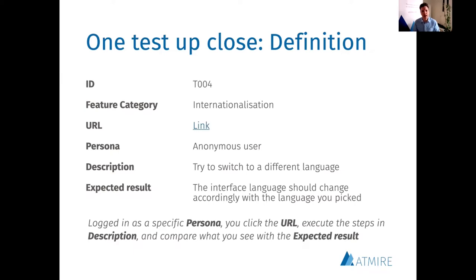The execution of each test implicitly starts with the imperative: as a specific persona — could be an anonymous user, an administrator, or somebody with submitter roles — you click the URL in the URL column, which is the link to the starting point of the test. This can be the home page, My DSpace page, or the page of a particular item. The description column makes clear what you are supposed to do after clicking that URL. The core of the test plan is that you compare what you see with what's described in the expected results column.